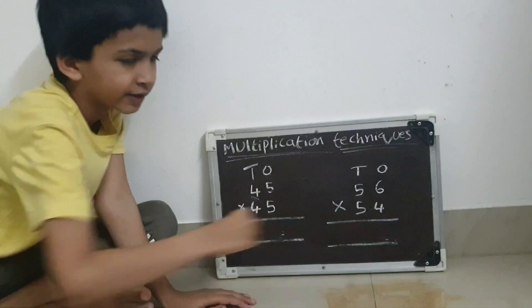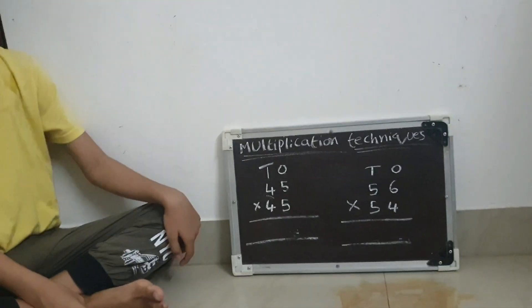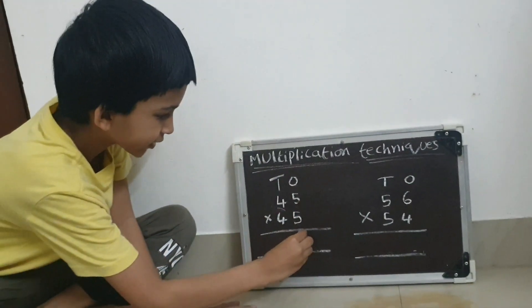Second rule: the split should be same. 4 and 4 are same, 5 and 5 are same. Now let's start the process. First multiply 5 by 5.